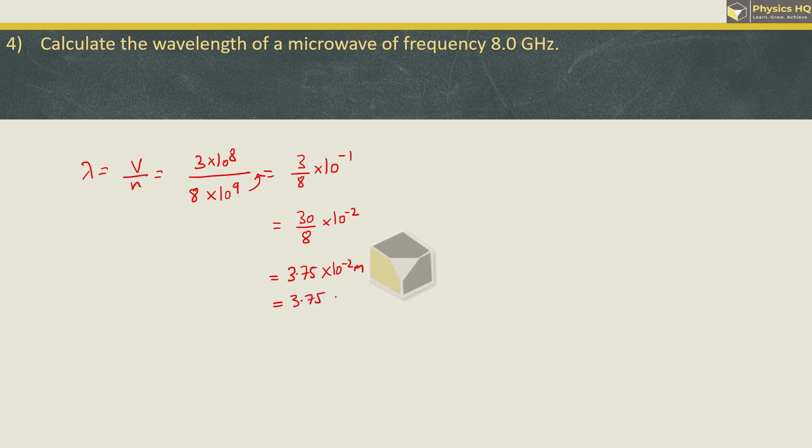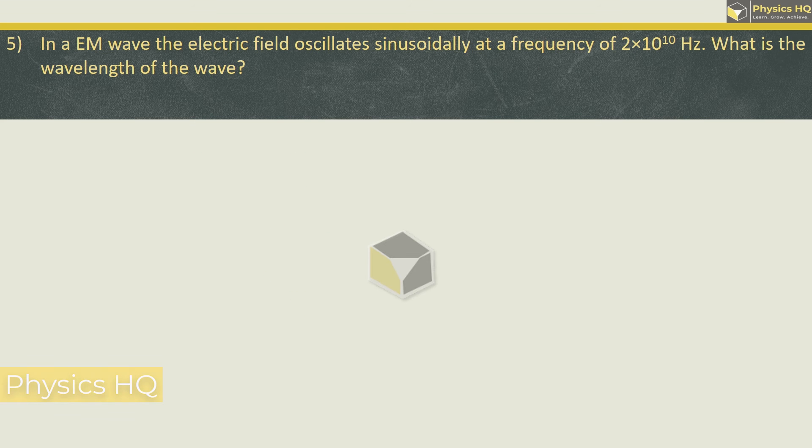Hope you all understood this. In an EM wave the electric field oscillates sinusoidally at a frequency of 2 into 10 raise to 10, what is the wavelength? Once again wavelength is V by N. V is 3 into 10 raise to 8, N is frequency 2 into 10 raise to 10. 3 by 2 is 1.5, 10 raise to minus 2. You can write this as 1.5 centimeter also.